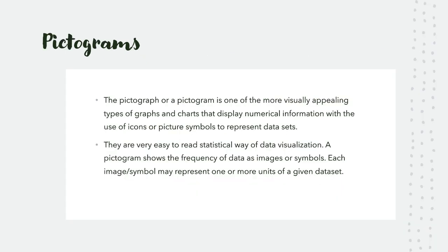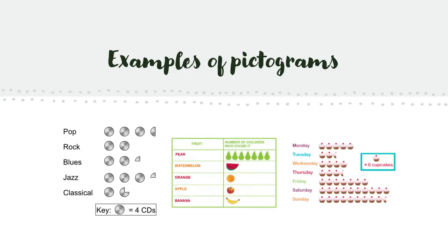Pictograms are one of the more visually appealing types of graphs and charts that display numerical information with the use of icons or picture symbols to represent data sets. They are very easy to read in a statistical way of data visualization. A pictogram shows the frequency of data as images or symbols. Each image in a simple may represent one or more units of a given data set.